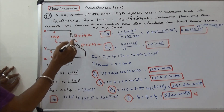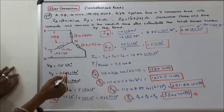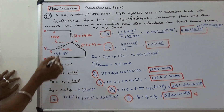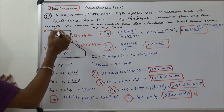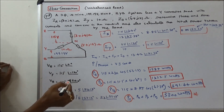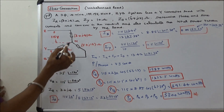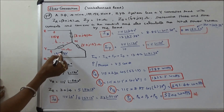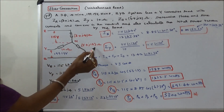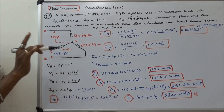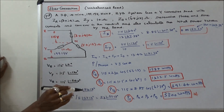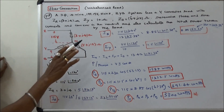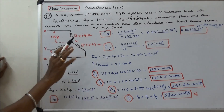A 3-phase 4-wire system with line-to-line voltage of 199.19 volts, 50 hertz, phase sequence RYB, has a star connected load with ZR equal to 3 plus J4 ohms, ZY equal to 10 ohms, ZB equal to 5 plus J12 ohms. Calculate the line and phase currents, the current in the neutral, and the total power taken by the load.